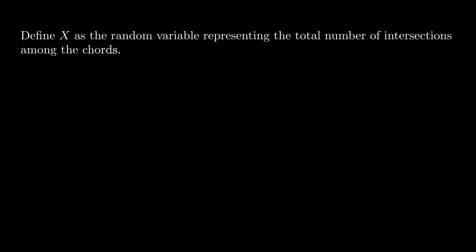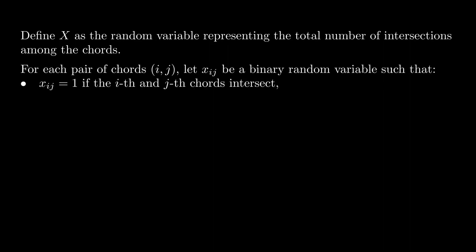Here's the solution. Define X as the random variable representing the total number of intersections among the chords. For each pair of chords (i, j), let xij be a binary random variable such that xij equals 1 if the i-th and j-th chords intersect and xij equals 0 otherwise. Such variables are also known as indicator variables.